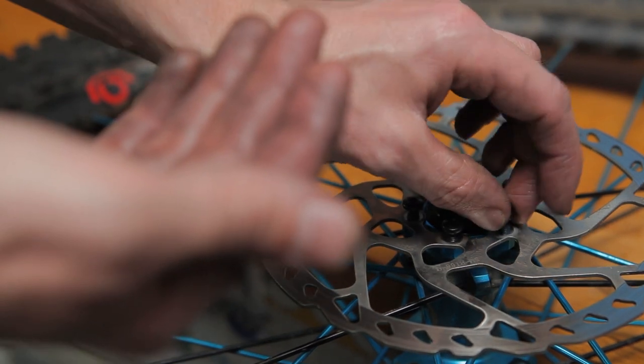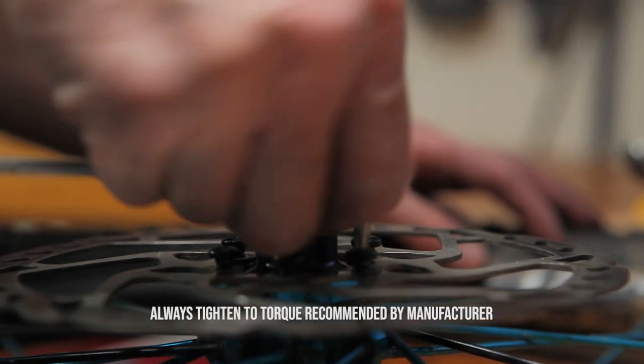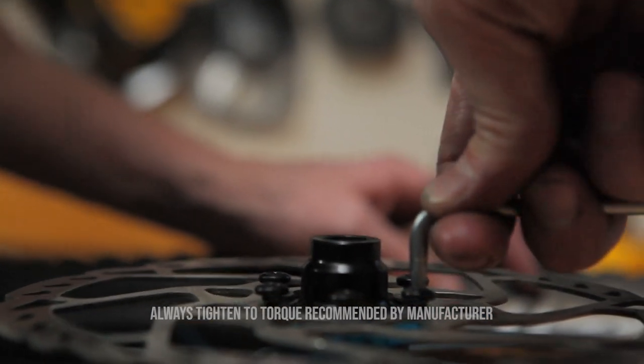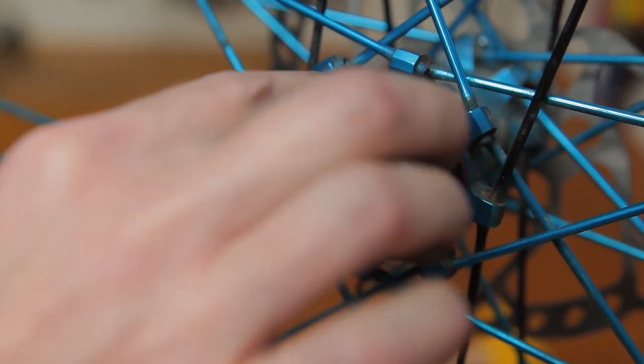With your hub service done, it's time to remount your cassette and rotor. Always apply some grease to the threads when installing your cassette.